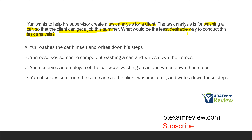What's the least desirable way to do the task analysis? A — Yuri washes the car himself and writes down his steps. That is a totally acceptable way to do a task analysis — you look at your own behavior, engage in the task, and write down the steps. B — Yuri observes someone competent washing a car and writes down their steps. Sure — if someone is competent enough to wash the car, Yuri can take their steps down and create a task analysis that way. C — Yuri observes an employee of the car wash washing a car and writes down their steps. Sure — that employee is probably well-trained on the car wash.